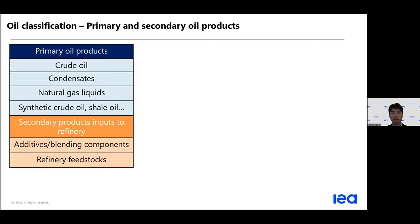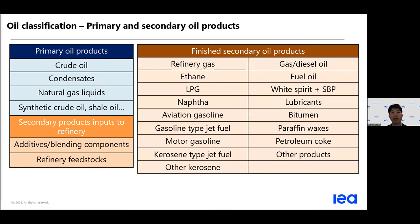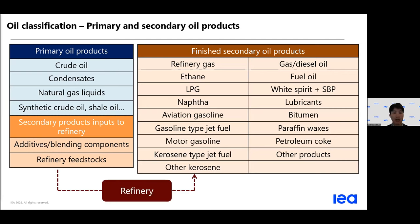On the concepts: oil products have been classified into several categories. Primary oil products means the product hasn't gone through the refinery process — it is the primary source of oil — consisting of crude oil, condensates, natural gas liquids, etc. On the other hand, we also have finished secondary oil products such as refinery gas, LPG, naphtha, motor gasoline, etc.